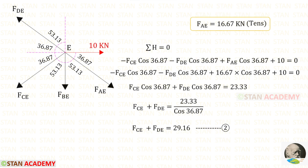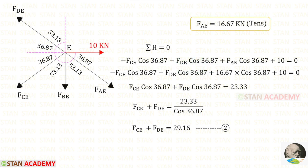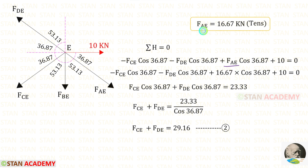Now let us apply sigma H = 0. 10 is acting towards the right side, so it will be positive. FDE and FCE are inclined; to make them horizontal we need 36.87°. Both are acting towards the left side, so both are negative, multiplied with cos 36.87°. FAE is also inclined; to make it horizontal we need 36.87°. Since it is acting towards the right side, it is positive, multiplied with cos 36.87°. We know FAE = 16.67 and it is tensile. After simplifying, we will get equation number two.